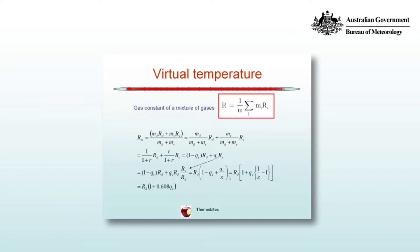And it's easy to show, given that definition, that 1 on 1 plus R is equal to 1 minus QV. So we've reduced our expression now for the specific gas constant for moist air to a term involving the gas constants for dry air, vapor and the specific humidity.